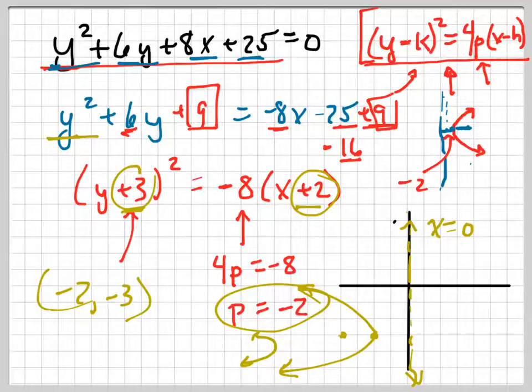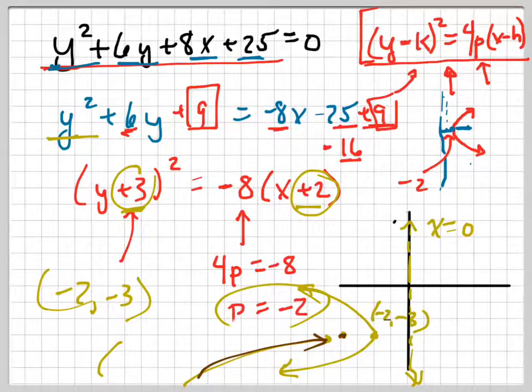So my focus is going to be... This point right here was negative 2, negative 3. So this point right here is 2 to the left of that, so it's negative 4 comma negative 3.